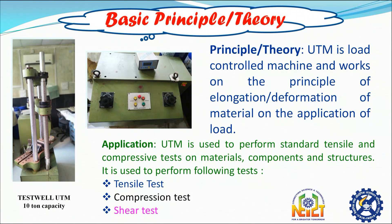Now on the screen, you can observe a Test-12 UTM machine of 10-ton capacity. The basic working principle behind it is the elongation or deformation of material on the application of load. It is also known as Universal Tester, Materials Testing Machine, or Machine Testing Frame. The universal part of the name reflects that it can perform many standard tensile and compression tests on materials.